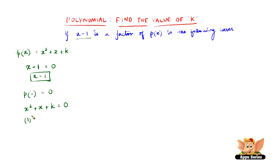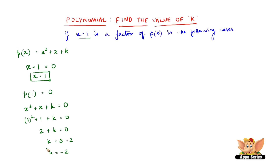That is 1 squared plus 1 plus k equals 0. 1 squared is 1, so 1 plus 1 is 2, and 2 plus k equals 0. Therefore k equals 0 minus 2, which is minus 2. The value of k equals minus 2.